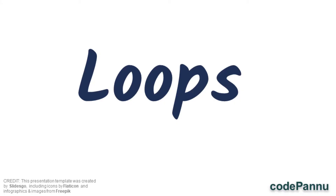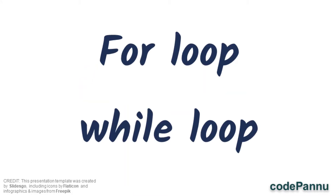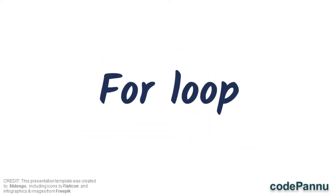This is the third video on the topic of loops. There are two different types of loops used in Python: the first is for loop and the second is while loop. In this week, we are going to see only about for loop.